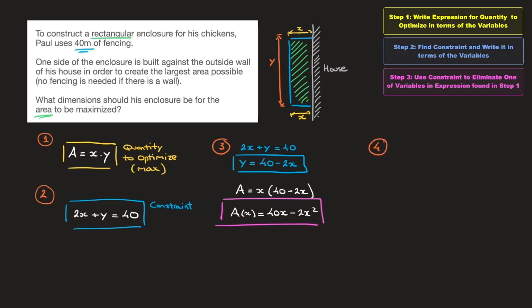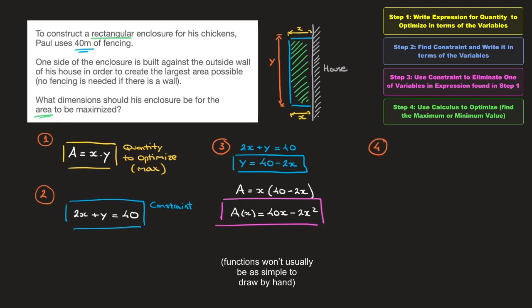And now that we have that, we can move on to step 4. And in step 4, we optimize, so in this case, we find the maximum value of this function. Now, given this function is a quadratic function, if we really wanted to, we could sketch the parabola and find the maximum point on it. But since we're seeing this as part of our calculus course, I'll go ahead and use the methods we've seen for finding any maximum or minimum point on a curve. So let's go. The first thing we need to do is differentiate this function.